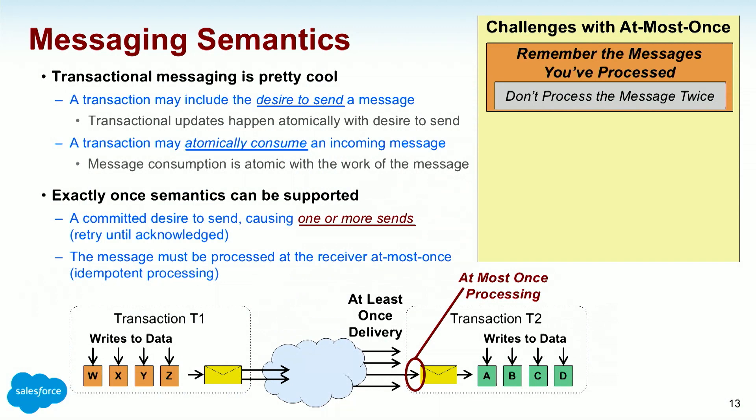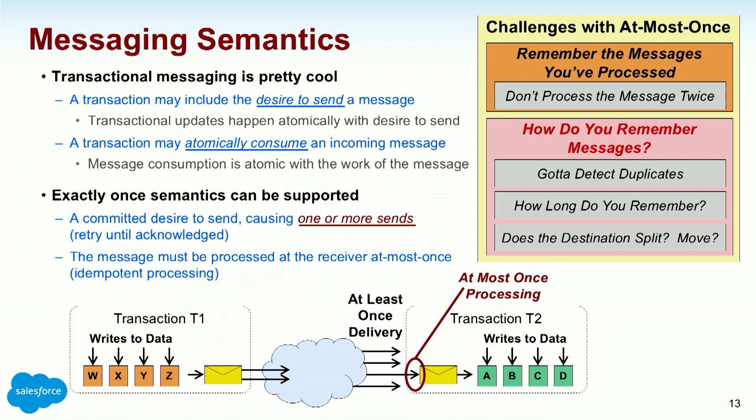All this junk weaves together. How do you remember the messages? You've got to detect duplicates. How long does the destination split? If I do this for a server to a particular piece of state and cut it in two, how do I manage that? This scalable computing stuff is really hard while guaranteeing at least once.